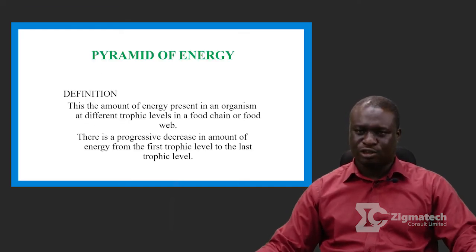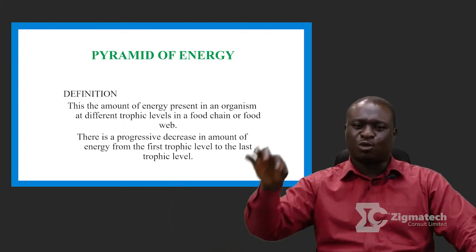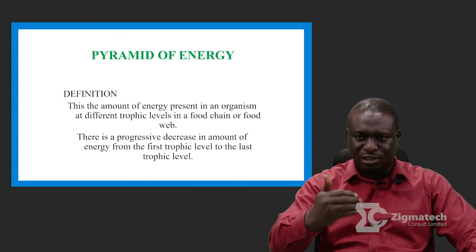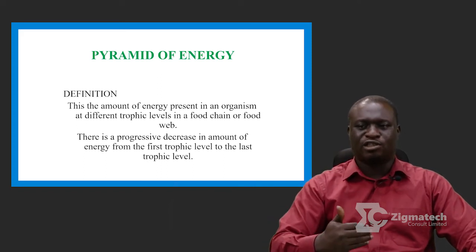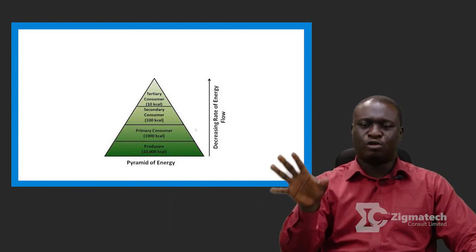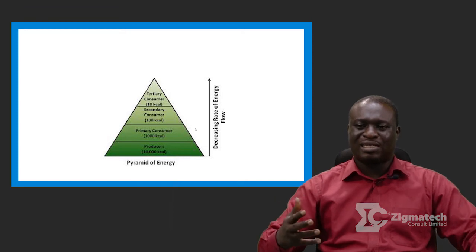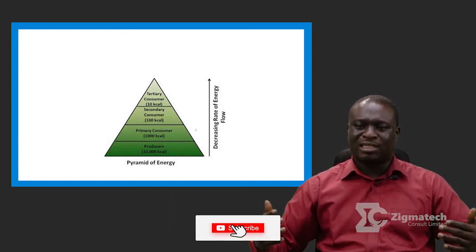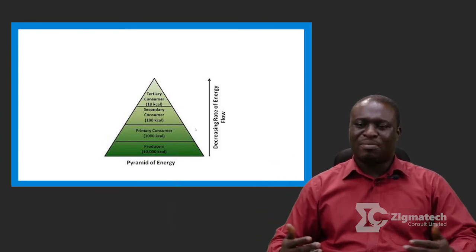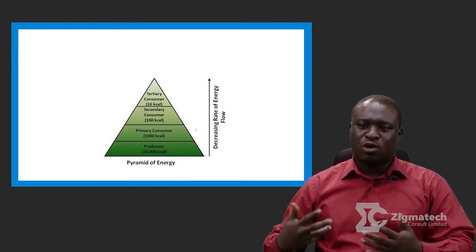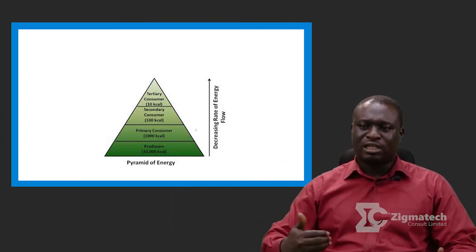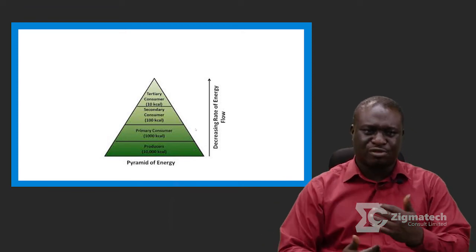Finally, pyramid of energy. What is pyramid of energy? It is simply the amount of energy present in organisms at different levels in a food chain or food web. Please take note that there is also a progressive decrease — just the same way we saw in pyramid of number. For example, the producer has about 10,000 calories; the primary consumer has about 1,000 calories; the secondary consumer has 100 calories; and the tertiary consumer has 10. So there is a progressive decrease in the rate of energy flow.